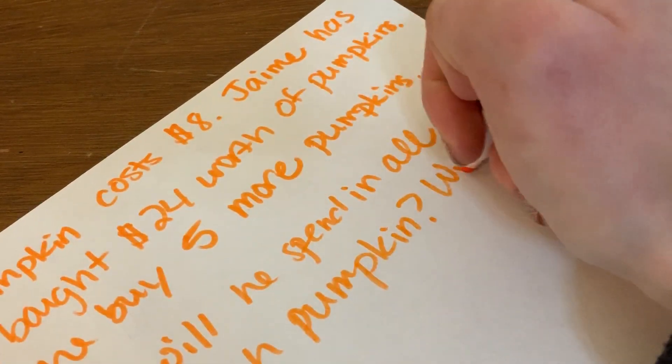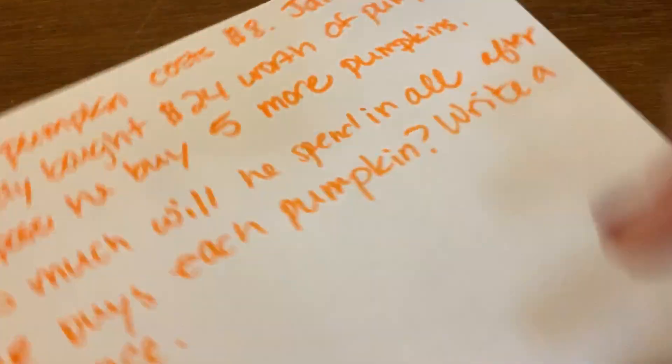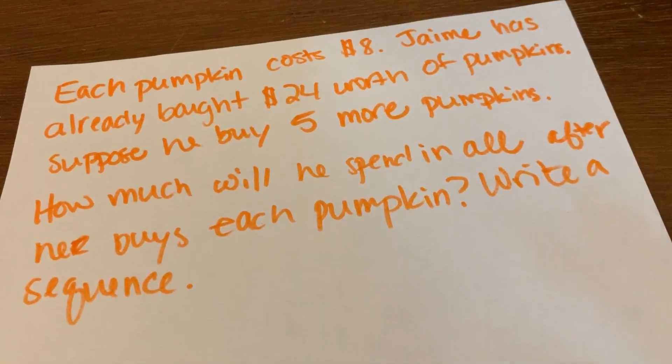Write a sequence. And we're going to write a sequence. All right, so each pumpkin costs $8. Jamie has already bought $24 worth of pumpkins.